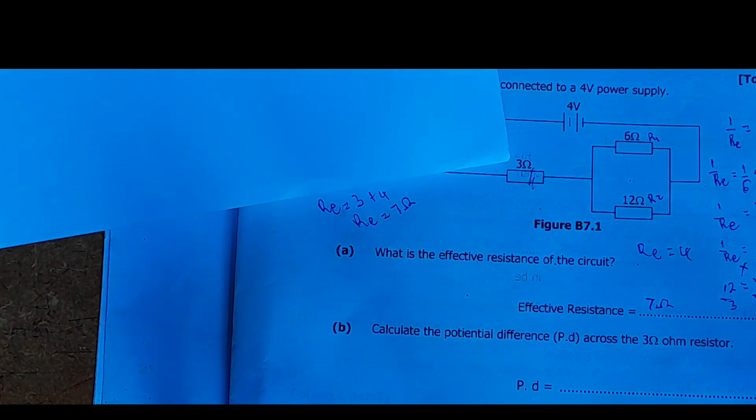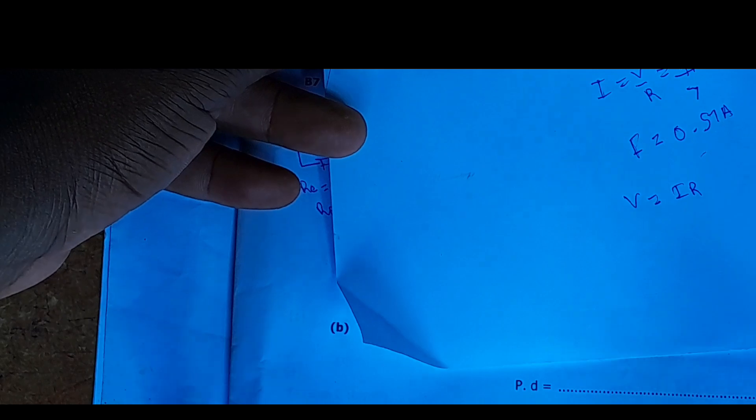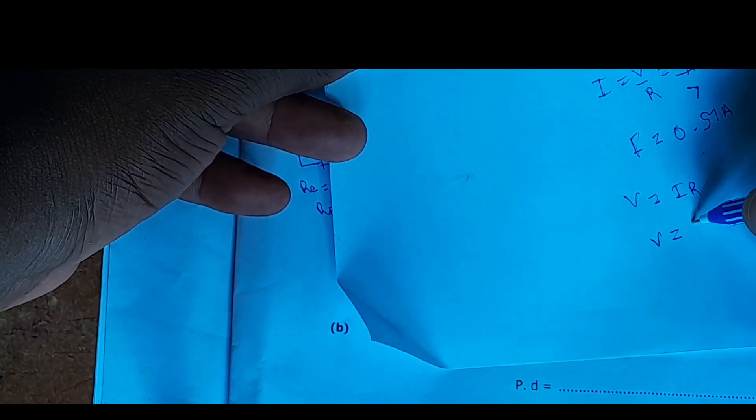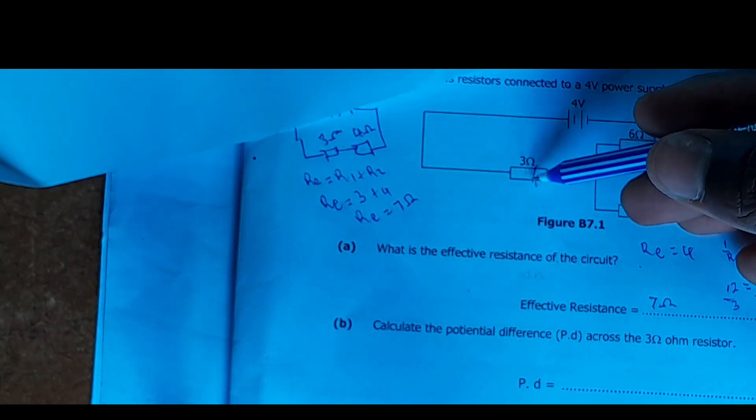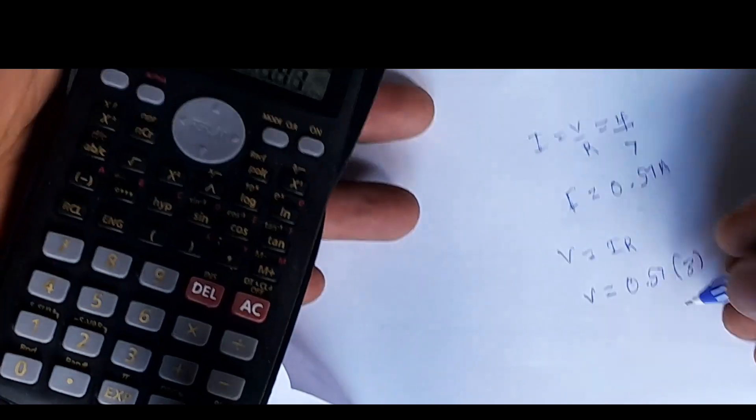Now our interest is to find the voltage across the 3-ohm resistor. Voltage equals current times resistance. Our current is 0.57 amperes and the resistance of this resistor is 3 ohms. So we multiply: 0.57 times 3. The answer is 1.71, so the voltage equals 1.71 volts.